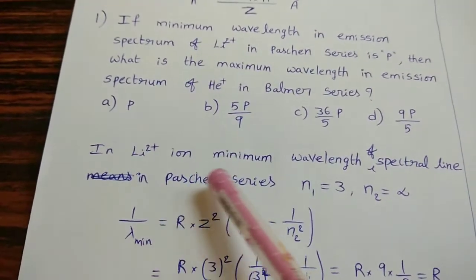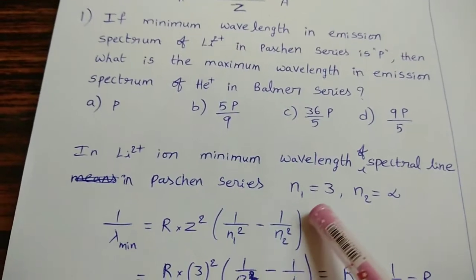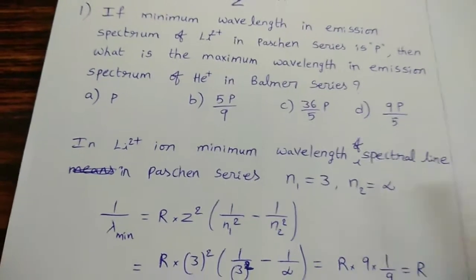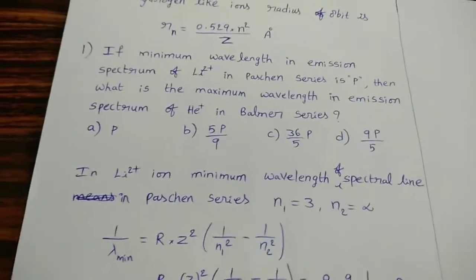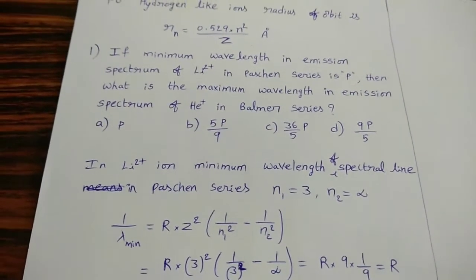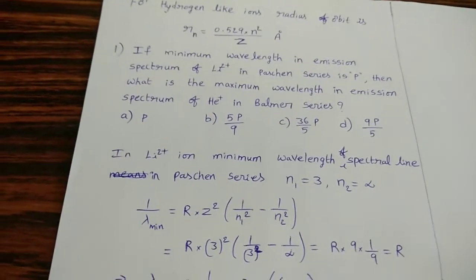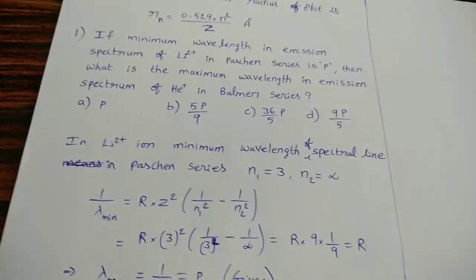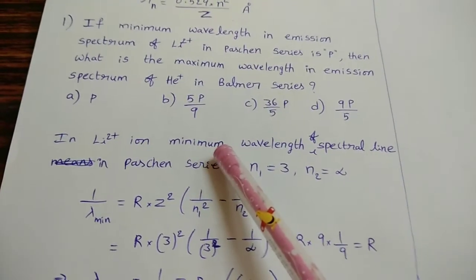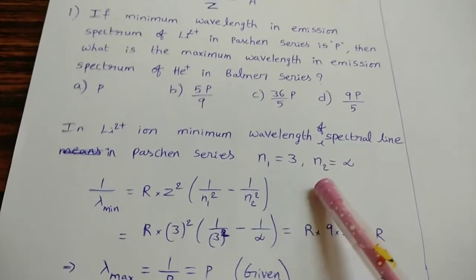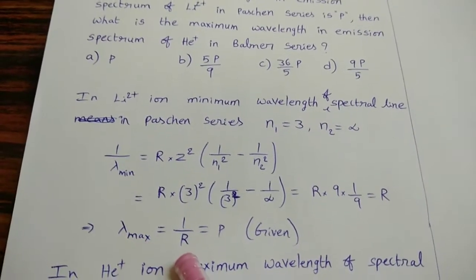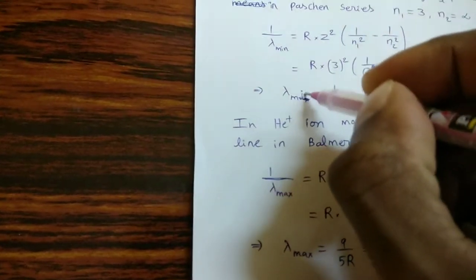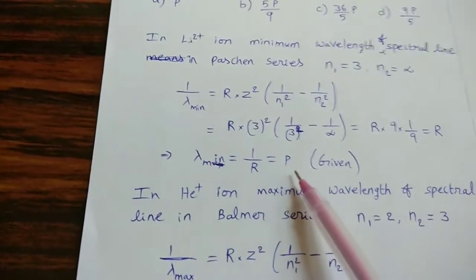When an electron jumps from infinite distance to the third orbit, we get the limiting spectral line in the Paschen series. In that case, the energy difference is very large so the wavelength is minimum. So for the given condition, minimum wavelength means N₁ = 3 and N₂ = infinity. Substituting, λ_min = 1/(9R) = P, so 1/R = 9P. This is given as P.